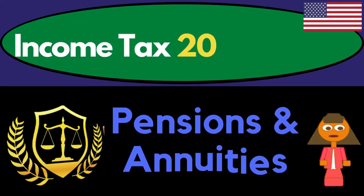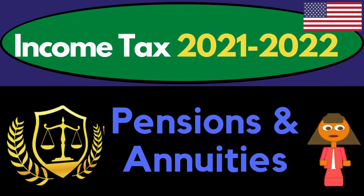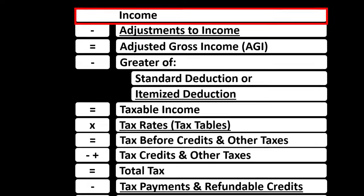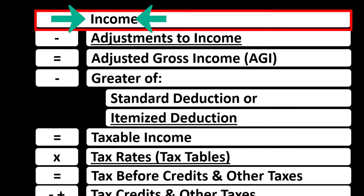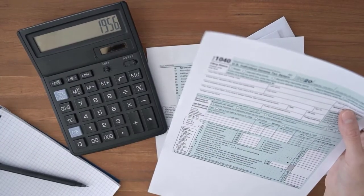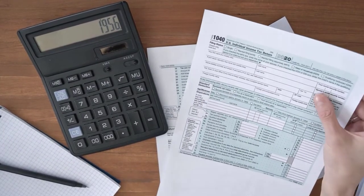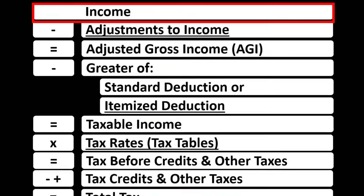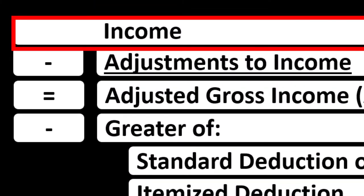Income tax 2021-2022, pensions and annuities. Get ready to get refunds to the max, diving into income tax 2021-2022. Here we are in the income tax formula, focusing in on line 1 again — the income line. This is in essence a summary; you can think of the Form 1040 as a summary, this being a more condensed summary than the 1040. The income line is then supported by other schedules.